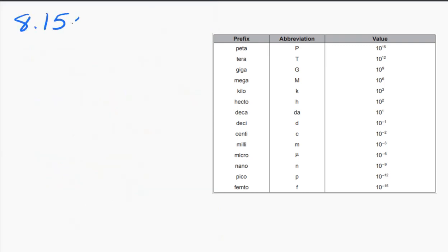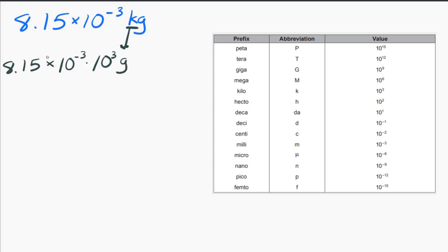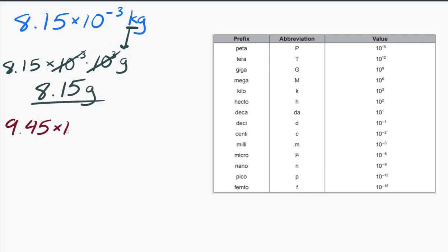Let's try 8.15 times 10 to the minus 3 kilograms. This is a little different because now I have a metric prefix to begin with. That kilo is 10 to the 3, so if I replace the kilo with 10 to the 3, the 10 to the minus 3 and the 10 to the 3 cancel out, and I end up with 8.15 grams. And 9.45 times 10 to the minus 6 meters — 10 to the minus 6 is the micro prefix — so that's 9.45 micrometers.